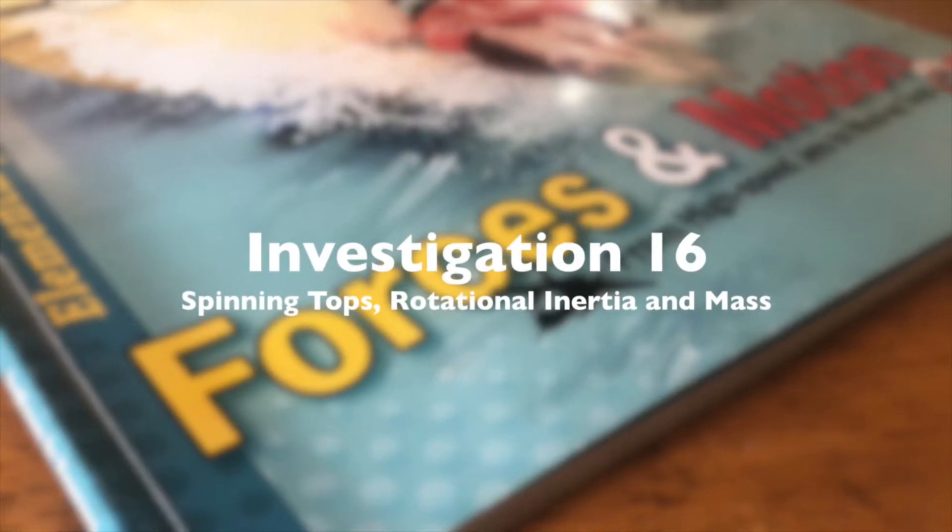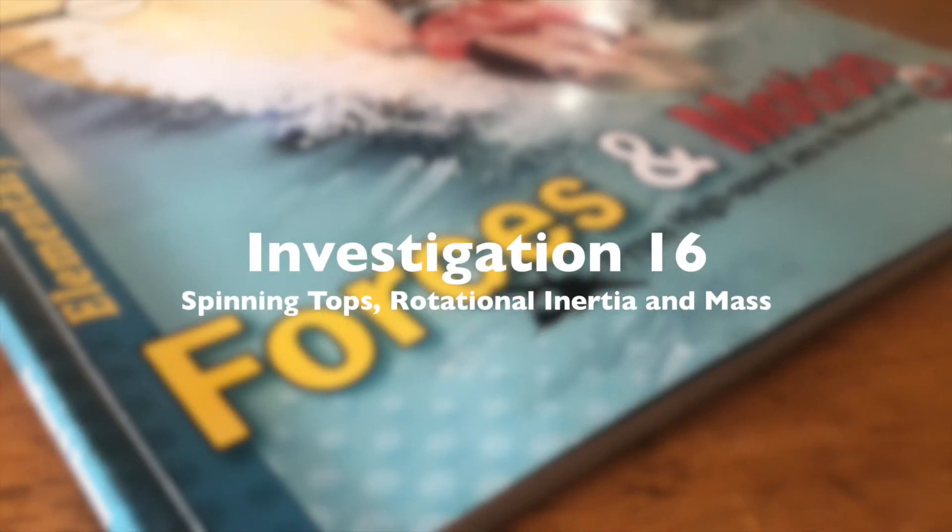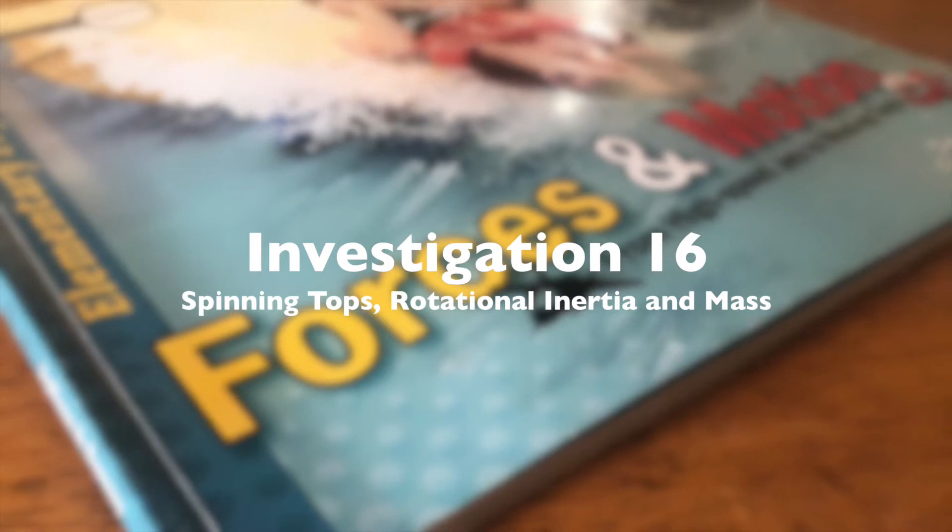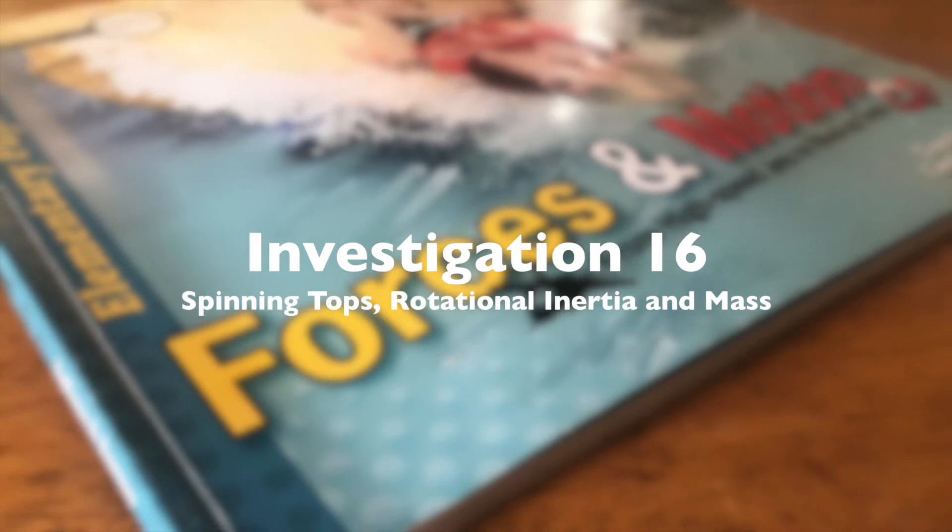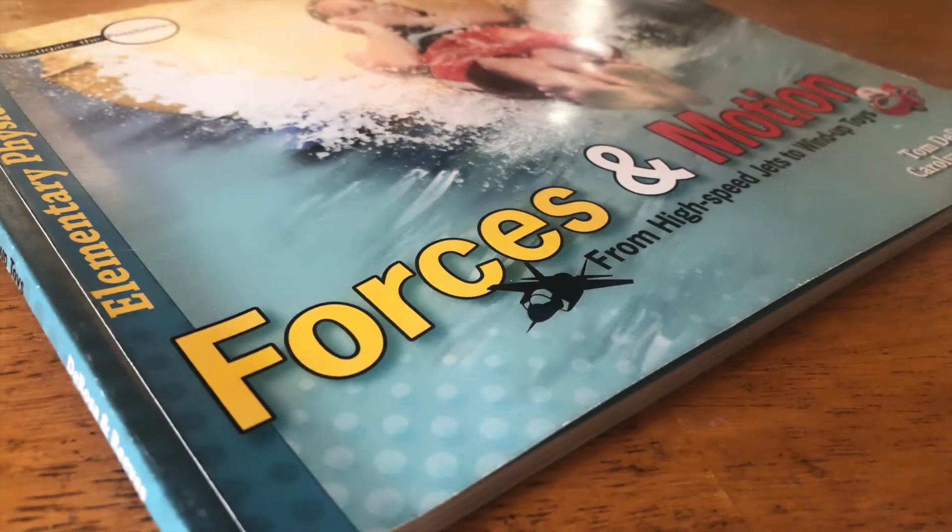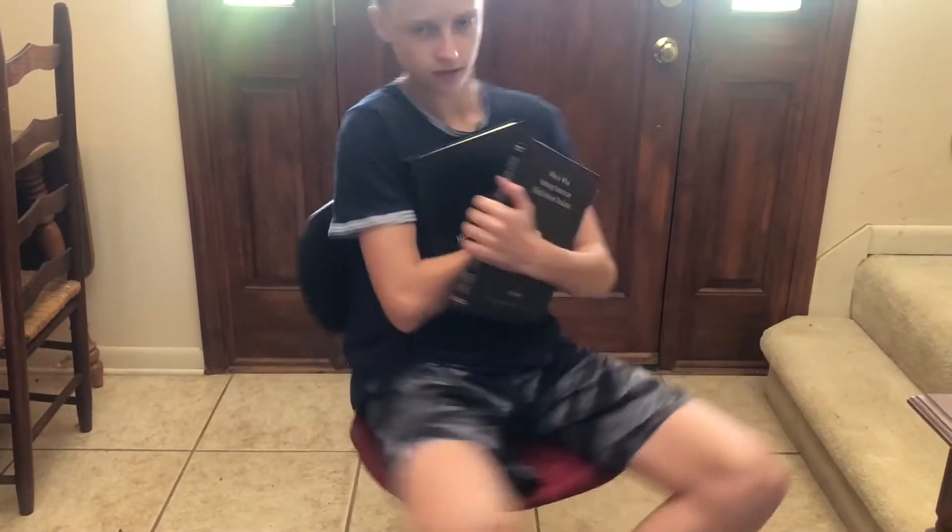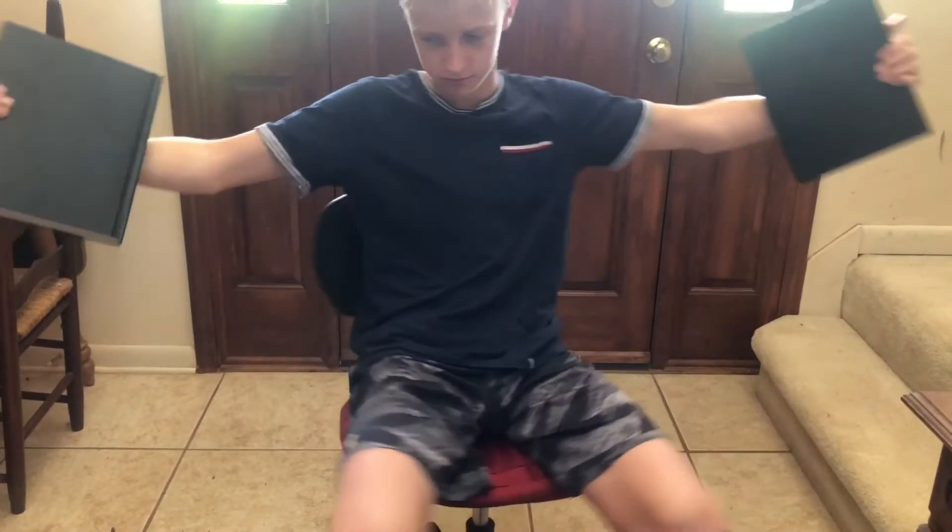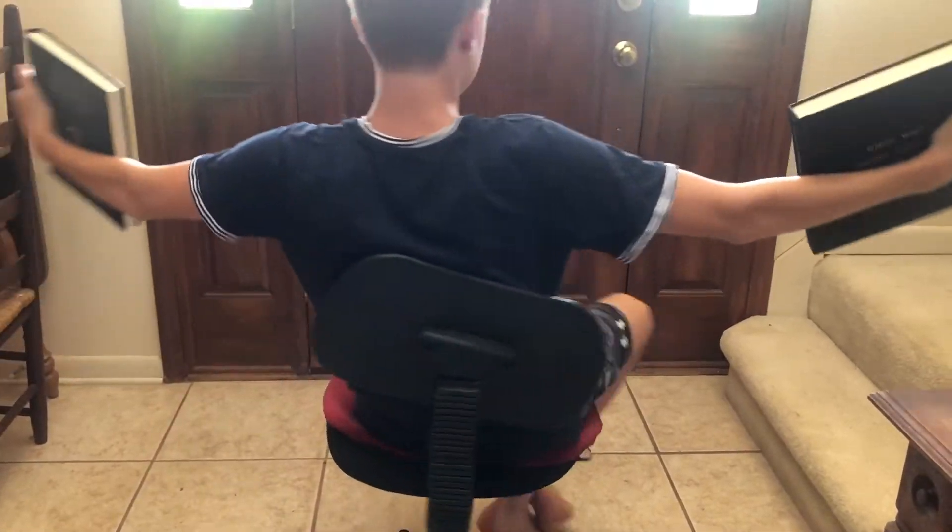If a swivel chair is available, teachers may choose to demonstrate what happens when a student spins around on it. The student should hold two heavy books close to their body while the chair is spinning. Hold one book in each hand and extend arms in opposite directions. While the chair is still spinning, bring the arms close back to the body.